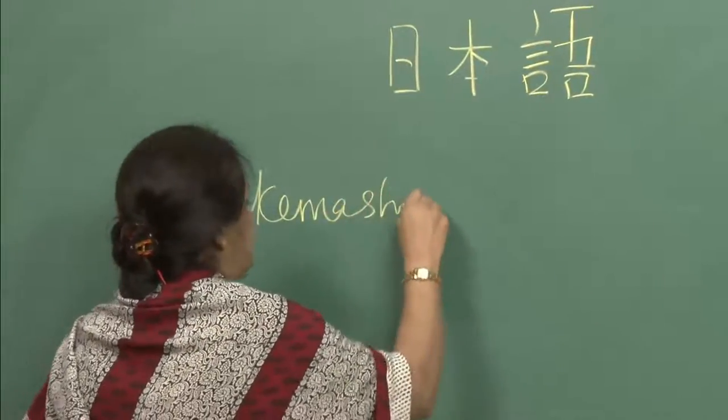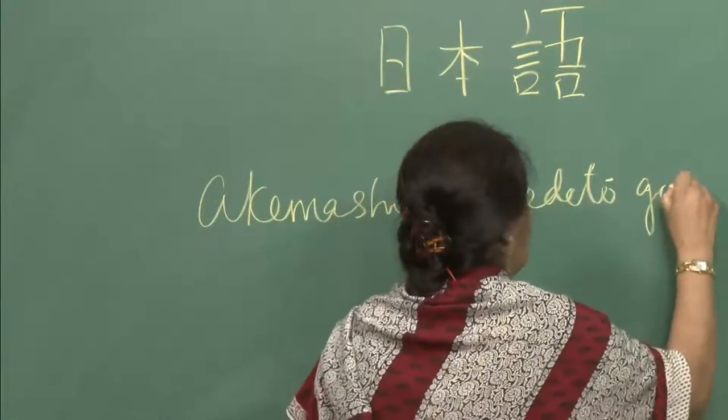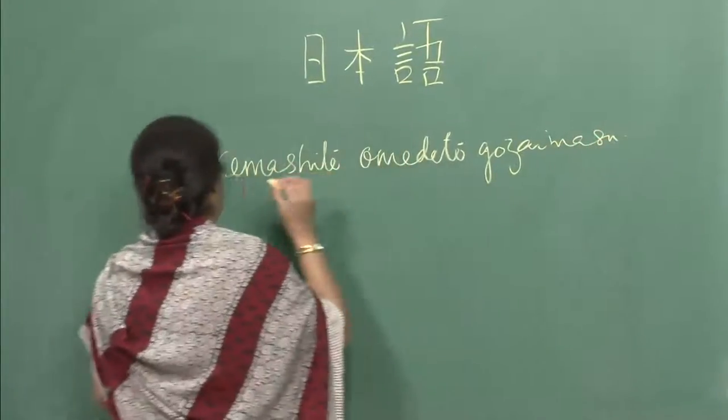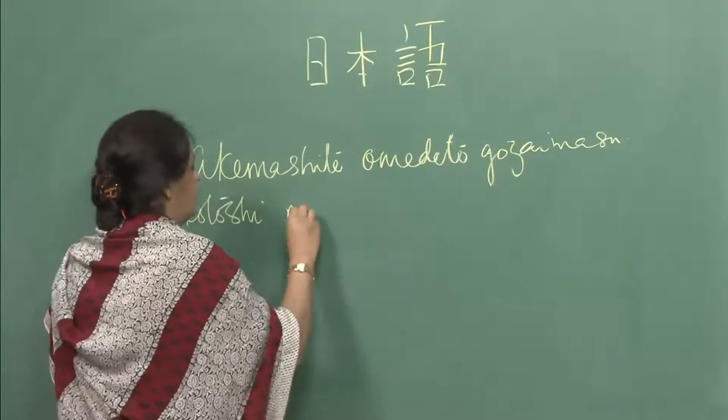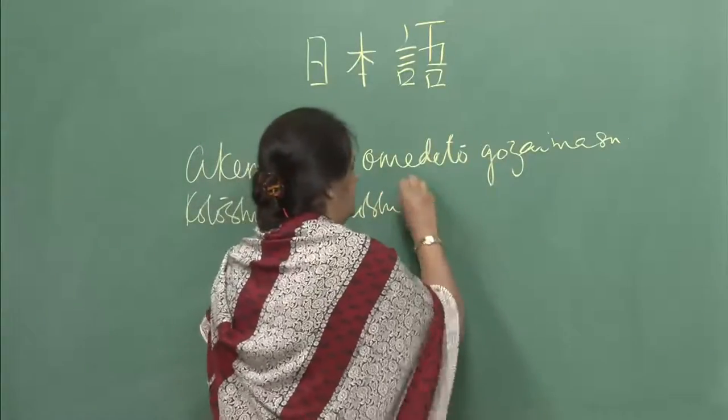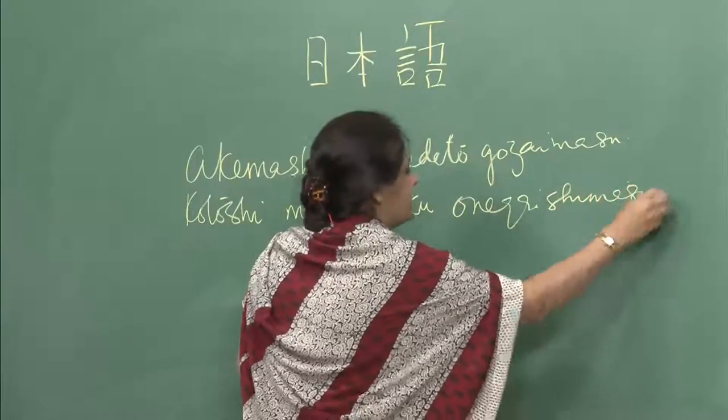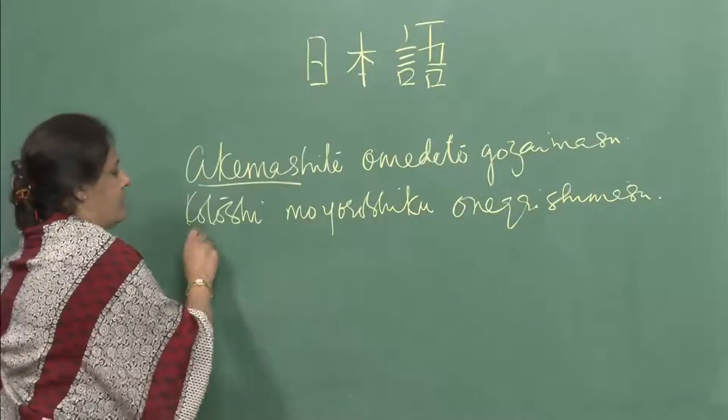That finishes the shukudai — I hope you all did it correctly. Last time I also gave a small assignment about o-shogatsu. I had asked you to collect more material on shogatsu, and I also collected some more. The phrase I gave you was 'akemashite omedeto gozaimasu, kotoshi mo yoroshiku onegai shimasu'. You already know the meaning. Now there is a new word — shinnen — right on top. Shin means new and nen means year, so shinnen means new year.